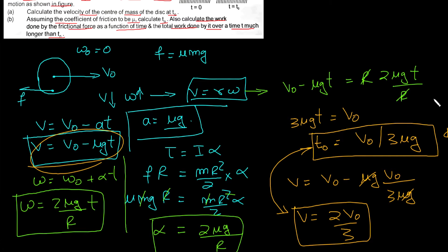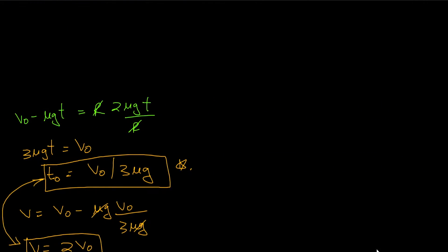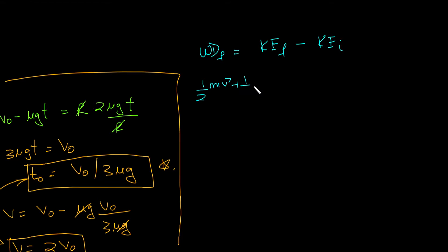Next, we need to calculate the work done by friction as a function of time. We use the work-energy theorem: work done by friction = final kinetic energy minus initial kinetic energy. The final kinetic energy during rolling has both translational and rotational components: (1/2)mv² + (1/2)Iω². Initially it was purely translational: (1/2)mv₀². Since this is as a function of time, we use v = v₀ - μg·t.